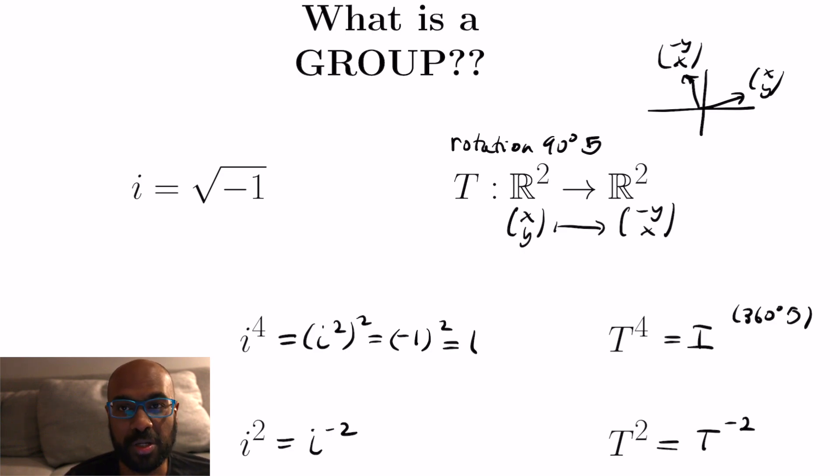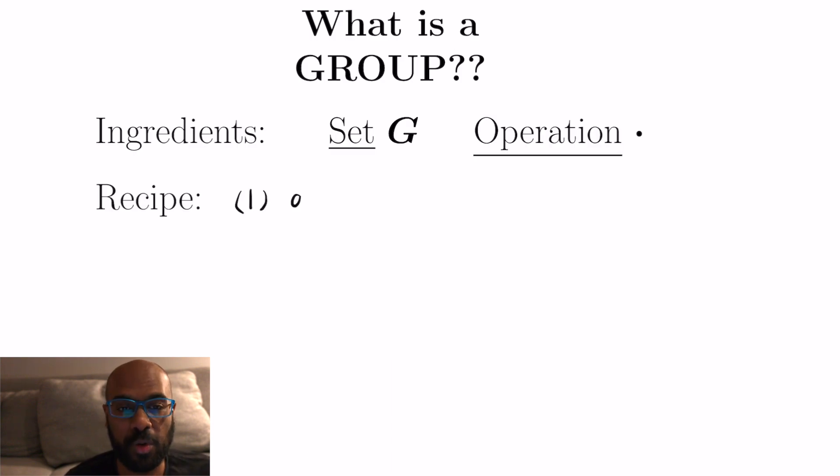So the objects we're working with, the complex number and this shift of the plane, look completely different to the naked eye. But when we look at the details of operating with both of them, the mathematics we're doing feels the same. And so the idea behind group theory is to make a unified framework where you don't think about these things as separate, but you think of them as one.